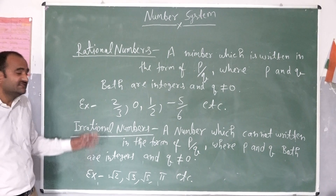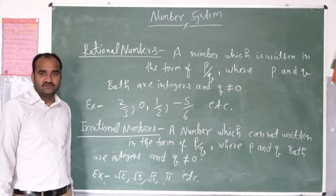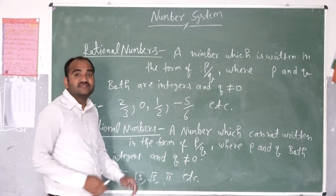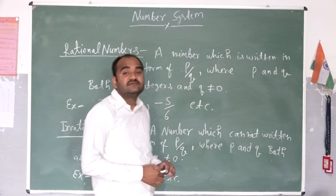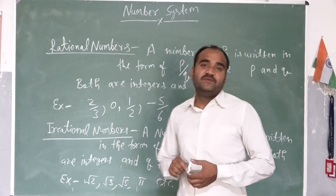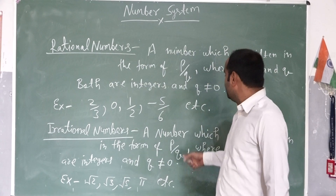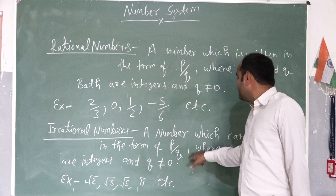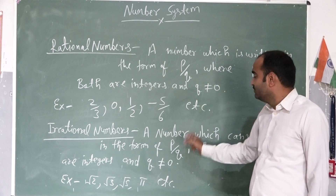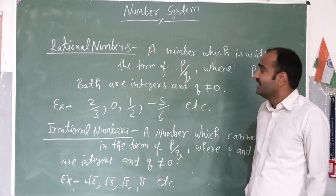This is the definition of irrational numbers. A number which cannot be written in the form of P by Q, where P and Q both are integers and Q is not equal to 0.